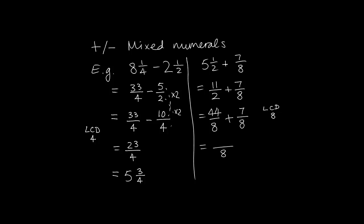Now that I've got them with the same denominators, I can quite easily add the numerators together. So that's going to give me 51 over 8 as my answer in terms of an improper fraction.